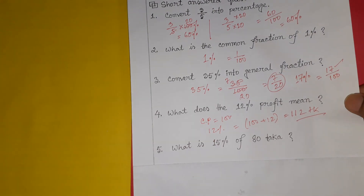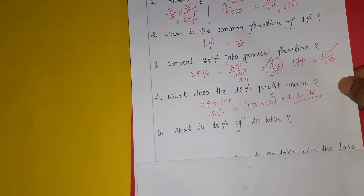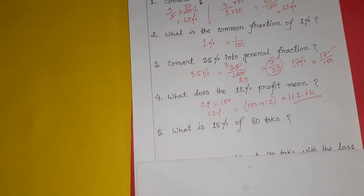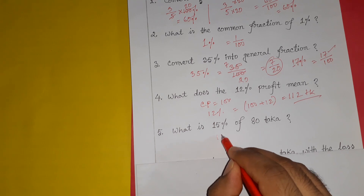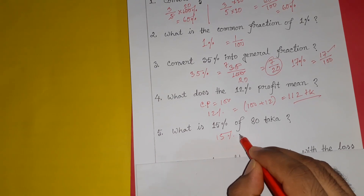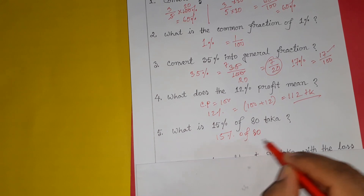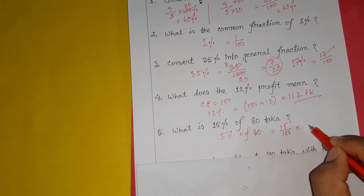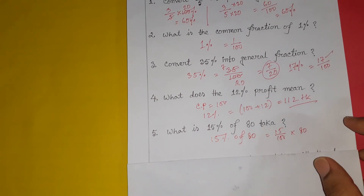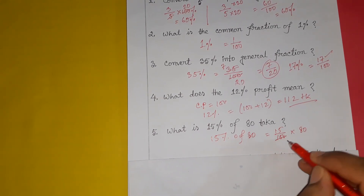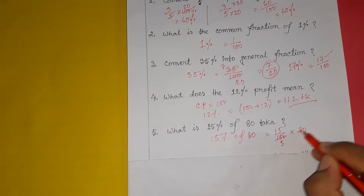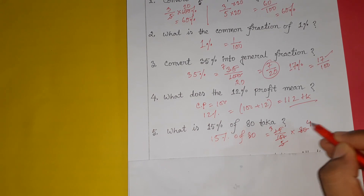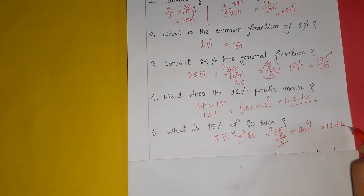Question number 5: what is 15% of 80? This question is very important. 15% means 15 divided by 100, and we multiply by 80. We reduce: 100 and 20 reduces by 5, 80 and 20 reduces by 4, 15 and 5 reduces by 3. So 3 multiplied by 4 equals 12. The answer is 12.